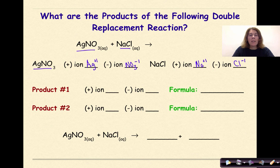Now we are going to take the positive ion from AgNO3 and place it with the negative ion of NaCl. So product 1 will be Ag+ and Cl- to give me AgCl because the +1 and the -1 are going to cancel out.